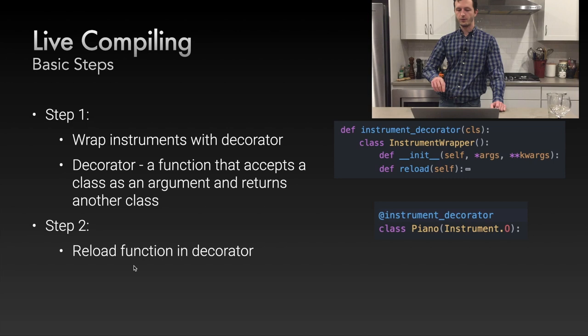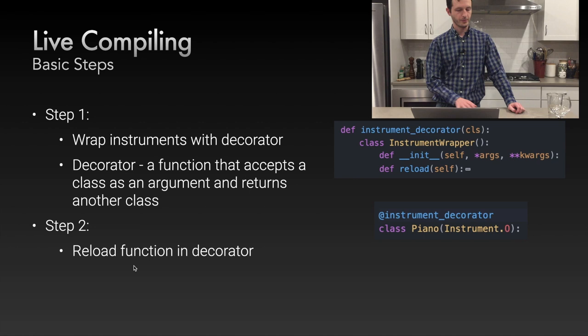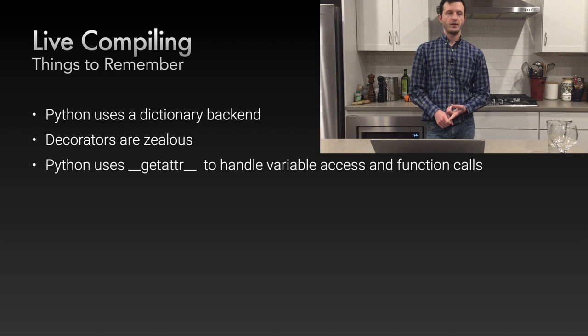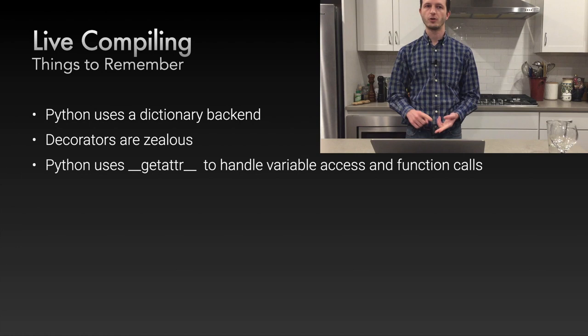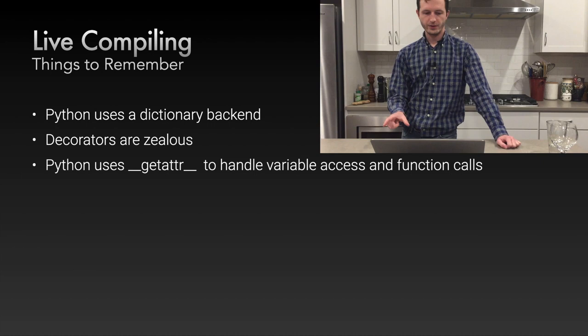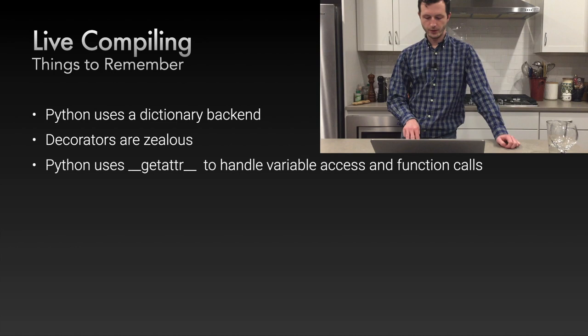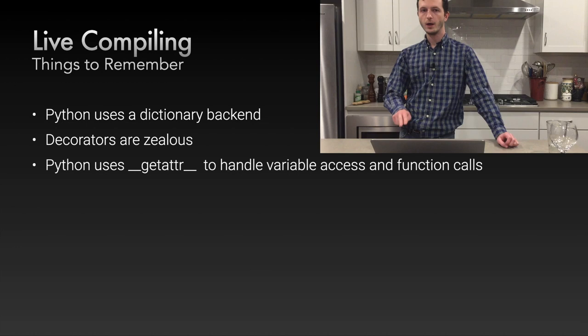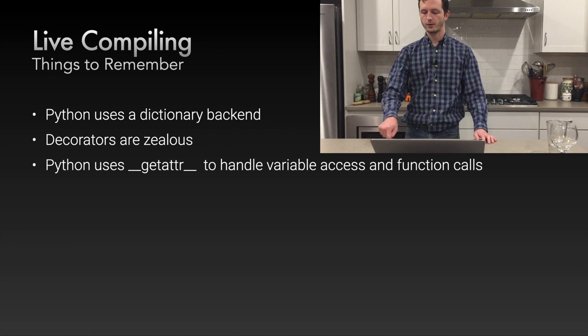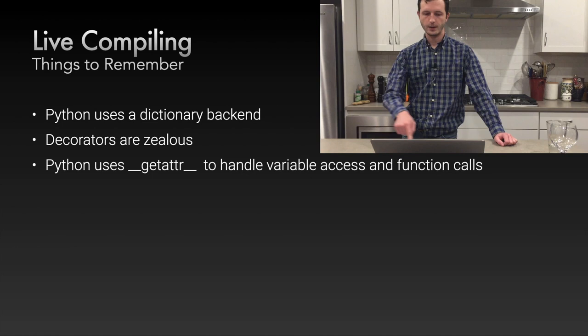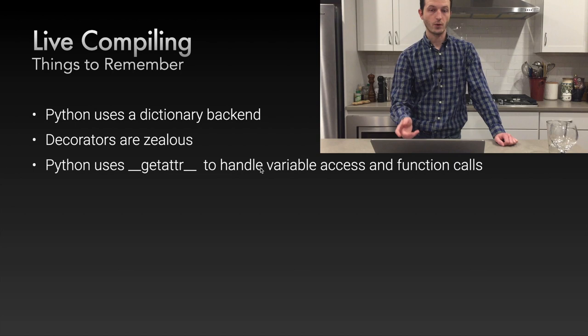Step two is writing the reload function — some deep Python magic. You can just copy this down and it'll work out of the box. Things to remember: Python uses a dictionary backend, so all member variables, functions, and class attributes are stored on a dictionary you can access. Decorators are zealous — when you add one to an object, it'll replace it with the wrapper in unexpected places, so we need to work around that. Python also uses two backend functions for variable access and function calls, and lets you override both — __getattribute__ for objects on the class, and __getattr__ for anything that isn't.